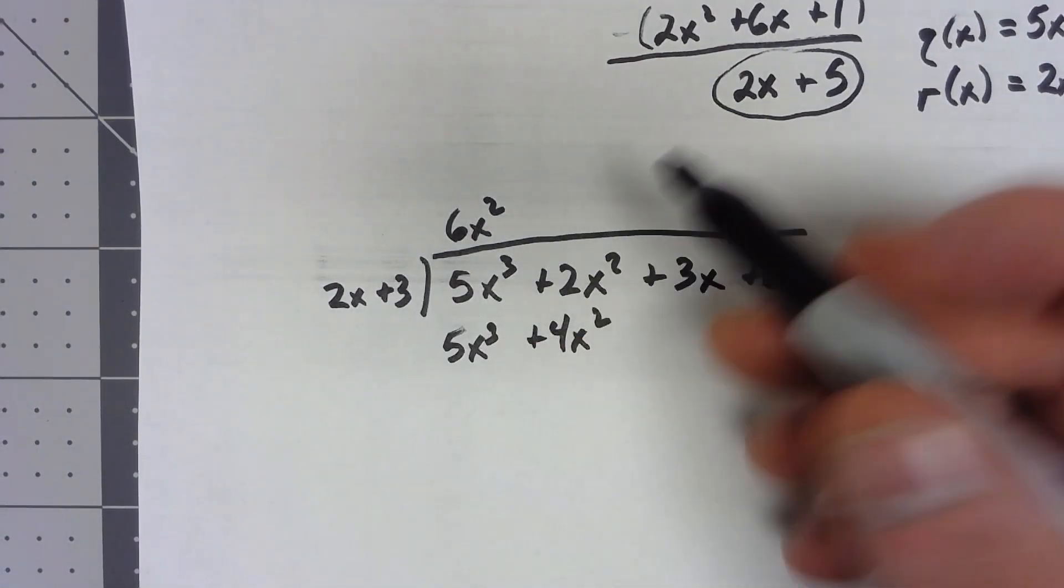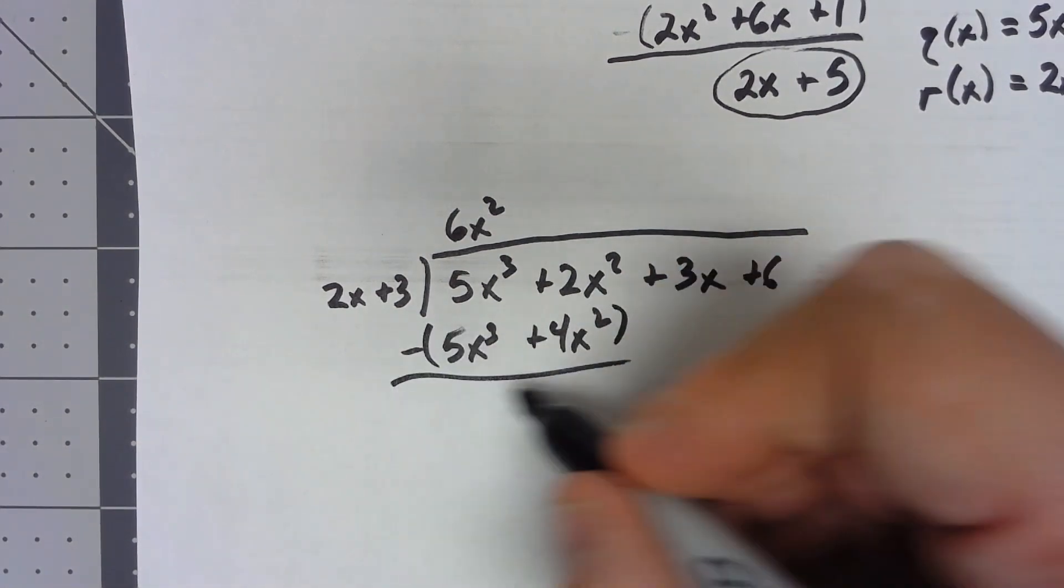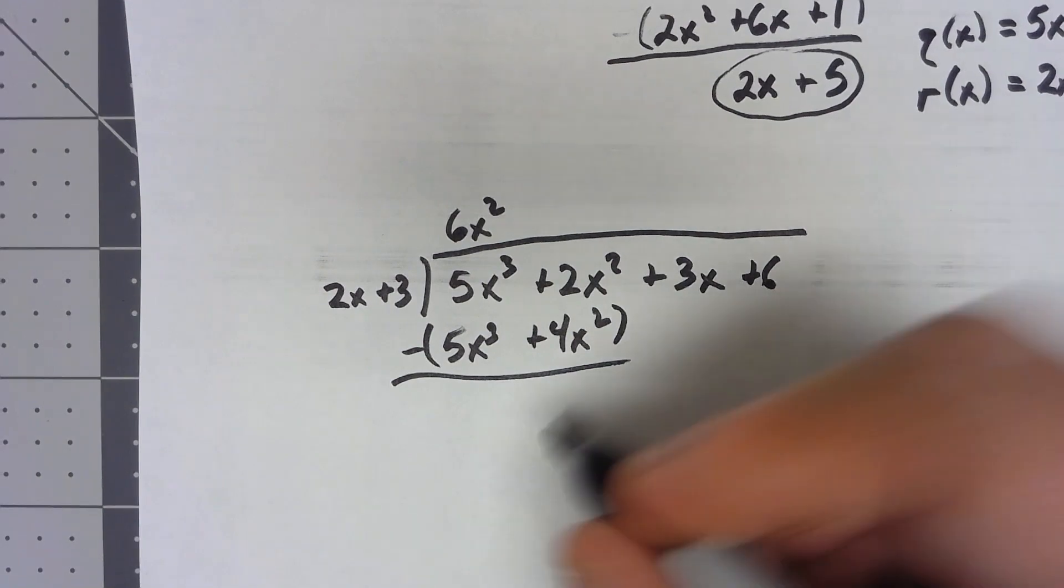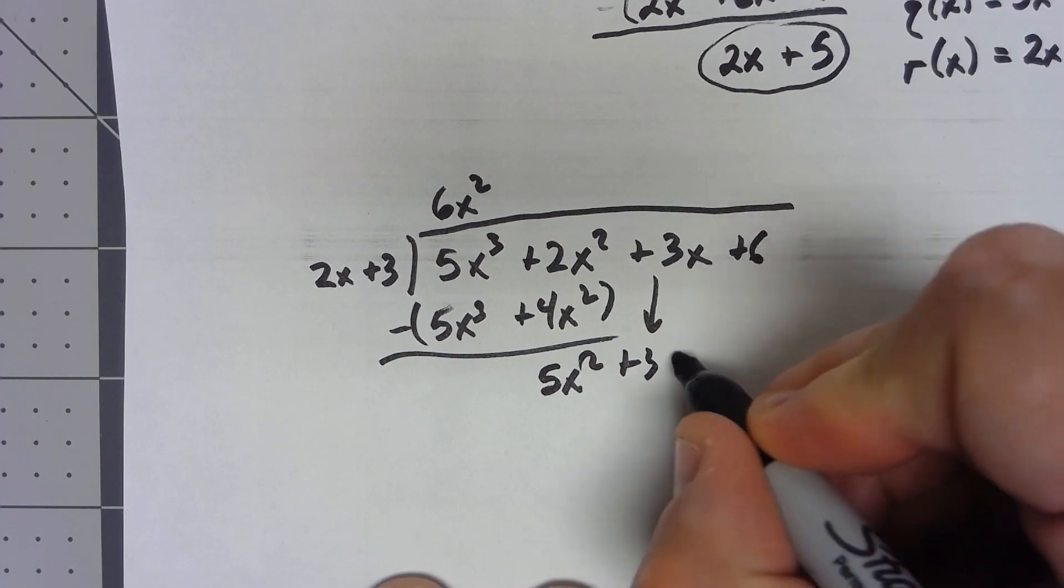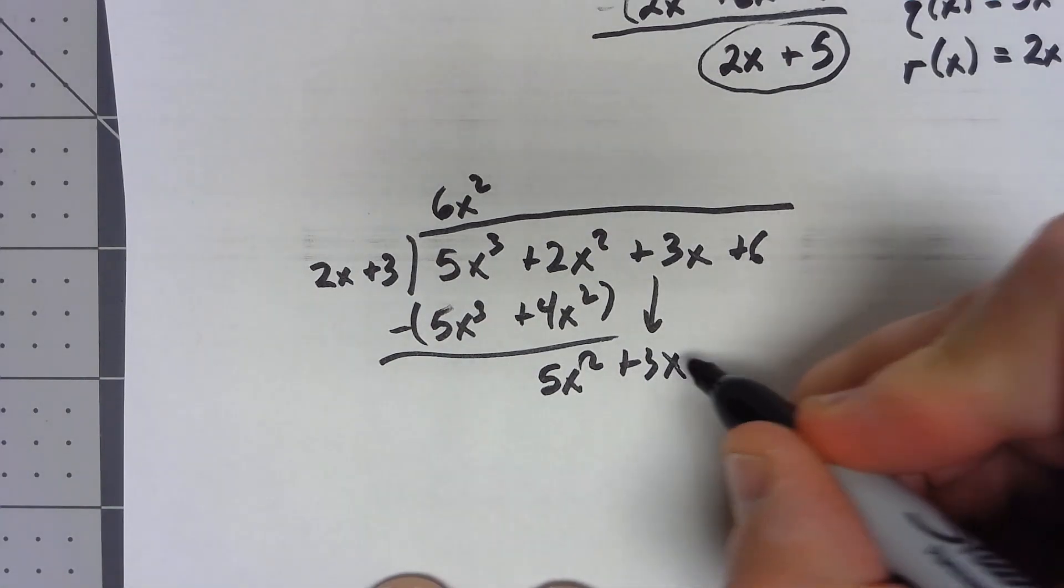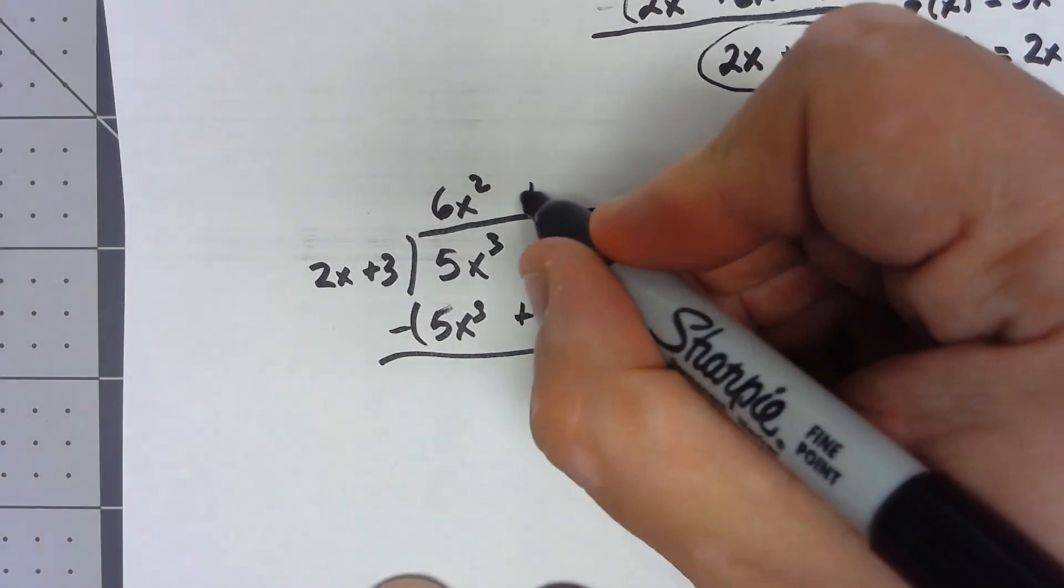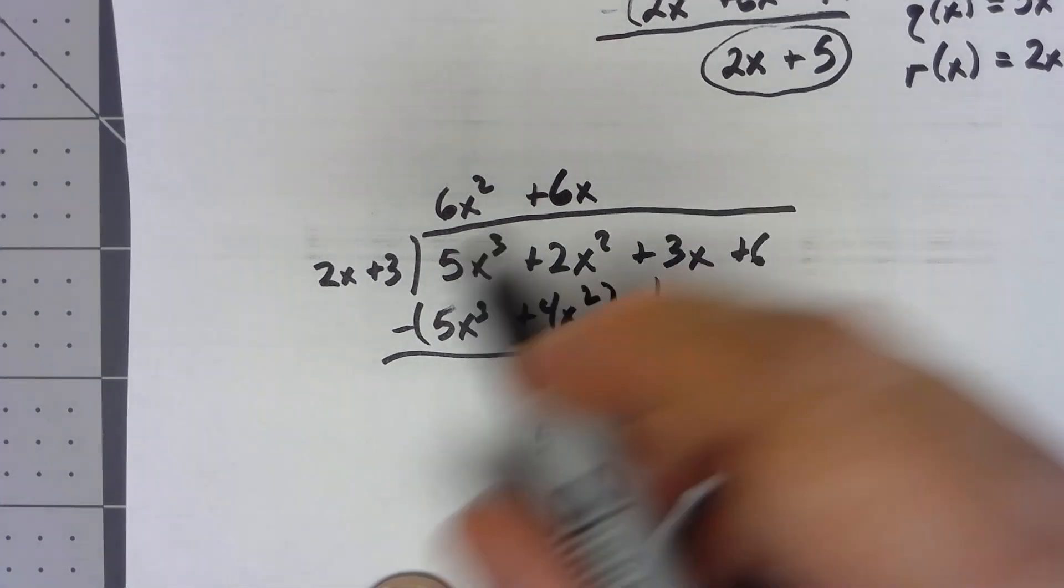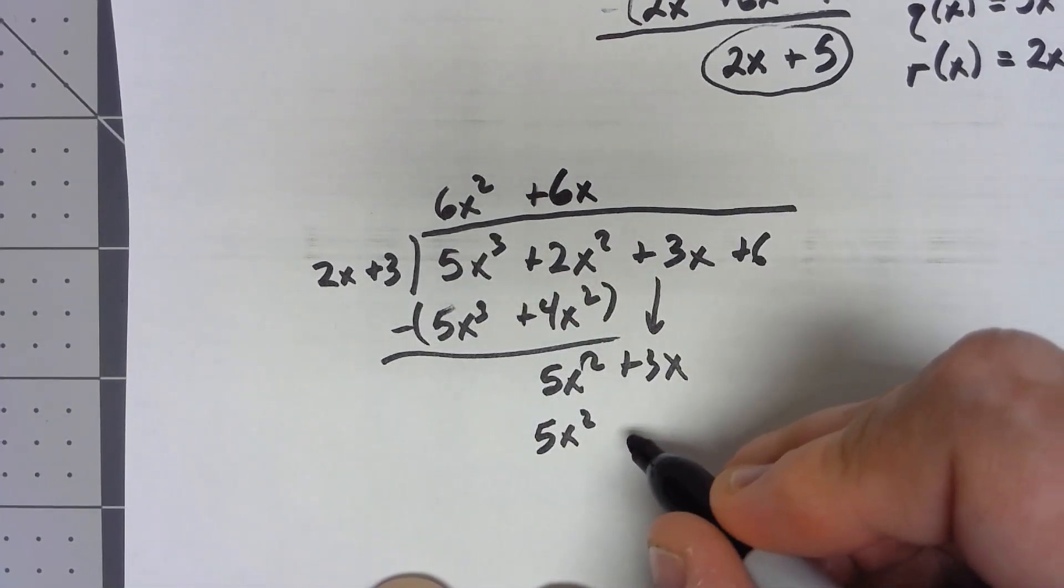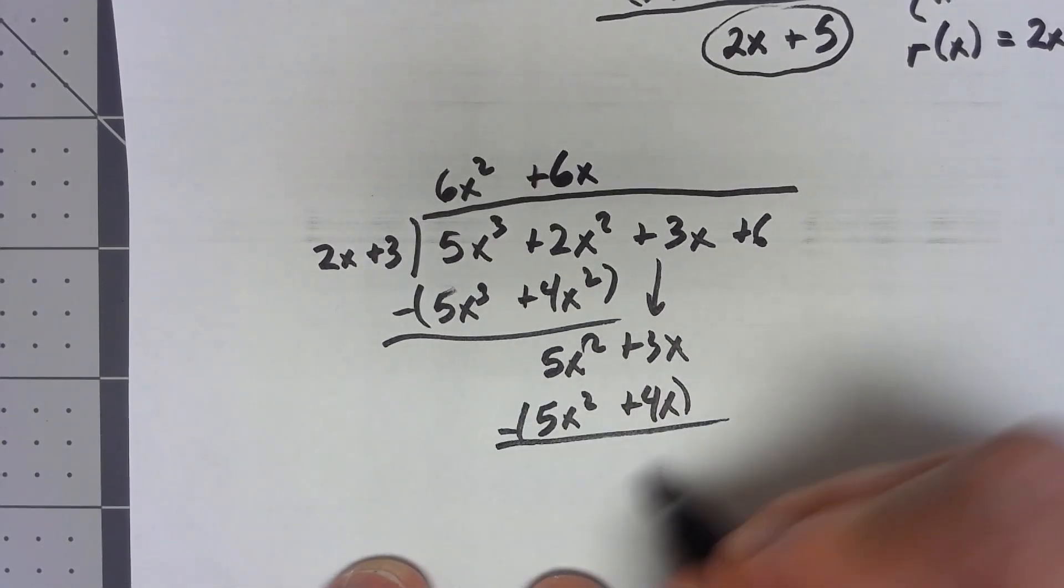Similar, in fact, pretty much the same thing. We need a 6x to get the 5x squared. Plus 18x is really plus 4x. We subtract. That gives me negative x or 6x plus 6.